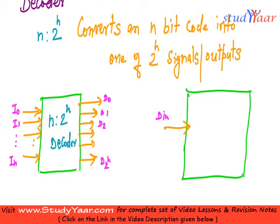You have your select lines. Let's call them as s0, s1, till sn. And you have your output lines which are 2 raise to n. So, these are my output lines. These are d0, d1, dot dot dot, till d 2 raise to n.